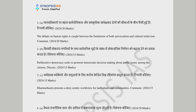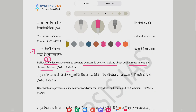There are some questions in paper 1, and paper 2 was a lot more dynamic. So we have a question like 3B, which asks about deliberative democracy — that deliberative democracy seeks to promote democratic decision-making about public issues among the citizens. When there is a confusing question, we need to understand it first. The whole question is based on this particular theme.